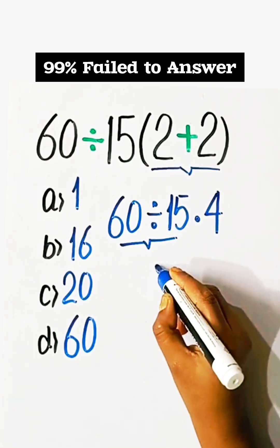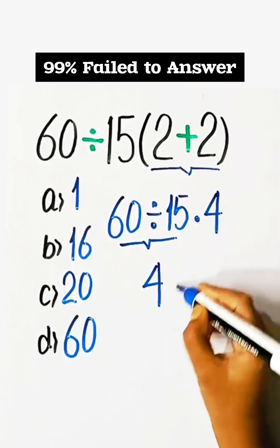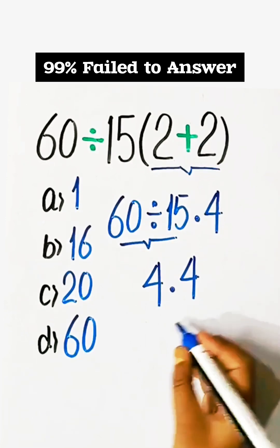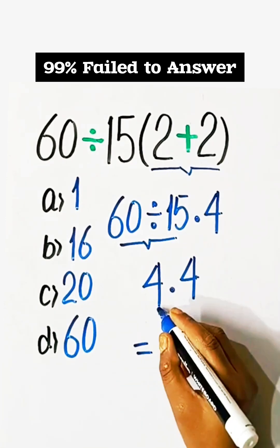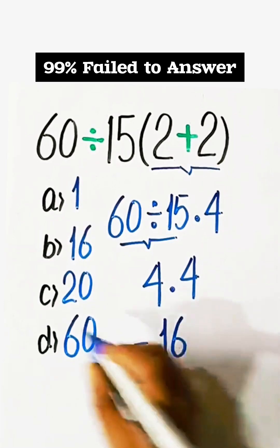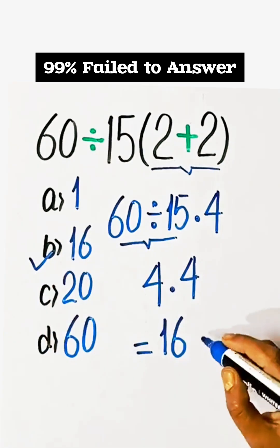4 multiply by 4 equals 16, so Option B is the correct answer.